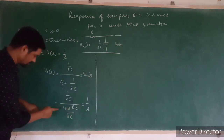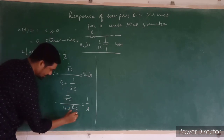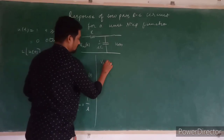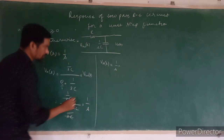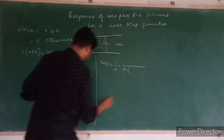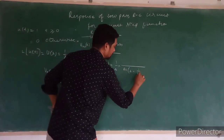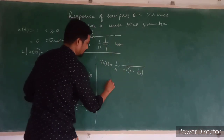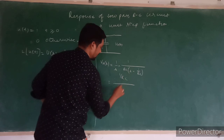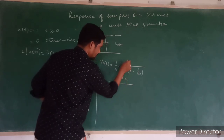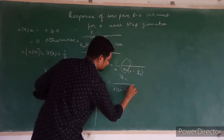In this equation, the 1 upon sC terms cancel. Taking RC as common from the remaining terms, V_naught(s) equals 1 upon s, multiplied by 1 upon RC, divided by s plus 1 upon RC. Rearranging, this becomes 1 upon RC in the numerator and s times s plus 1 upon RC in the denominator.